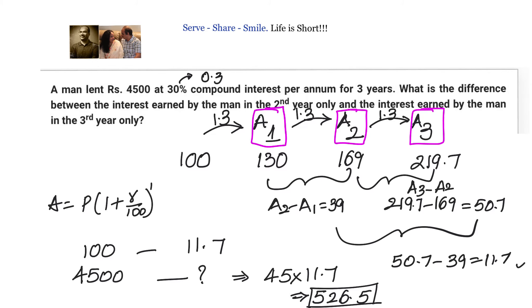So in a competitive exam, if we have been asked, then instead of starting with and substituting in the formula 4500 into 1 plus 30 by 100 whole square minus different formulas, it is easy if you start with 100, an easy number, and then apply the compound interest. Find out the amounts and we know the compound interest is the difference between the successive amounts. So we can easily find out the solution.